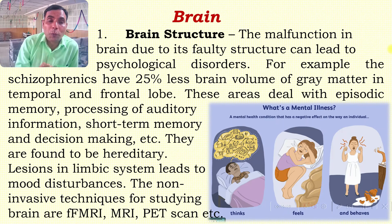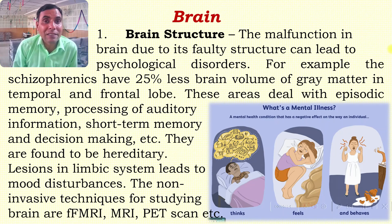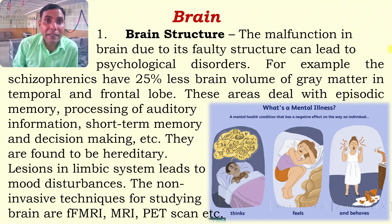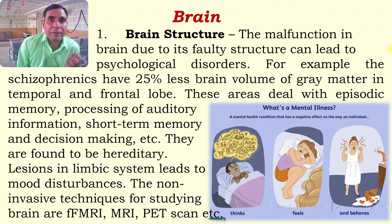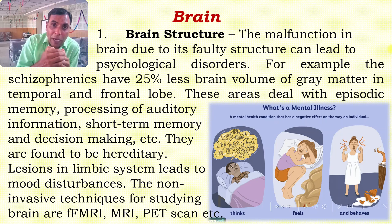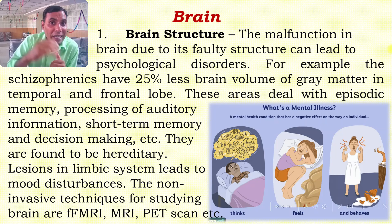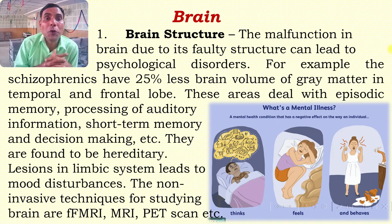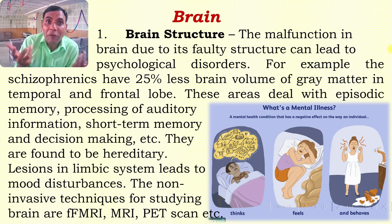The temporal and frontal lobes deal with various executive functions such as decision making, planning, and processing of auditory information. There is also a limbic system in our brain, and if there is some kind of injury or lesion in the limbic system, the individual may manifest mood disorders.